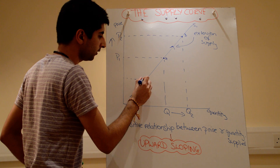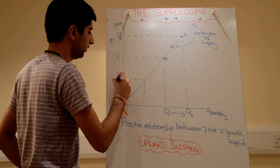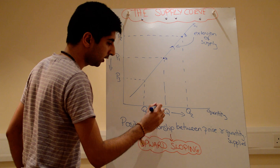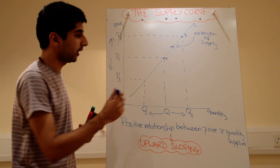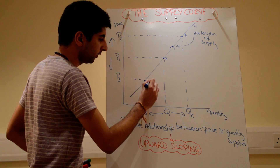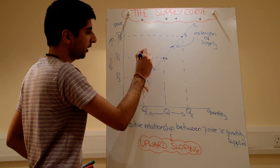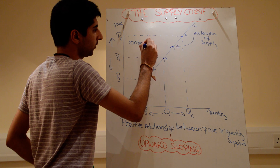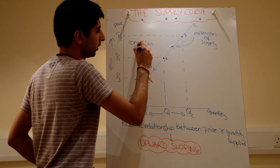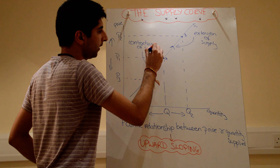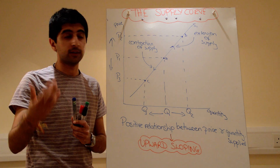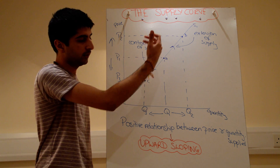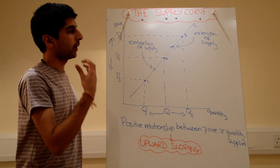Now let's reduce the price — say to P3. The price has gone down; quantity of supply has fallen to Q3. Moving from Q1 to Q3 is a fallen quantity of supply — let's call that point C. We've moved down the curve, which on the supply curve is a contraction of supply. Any increase in quantity of supply means we're extending supply; any reduction means we're contracting supply.